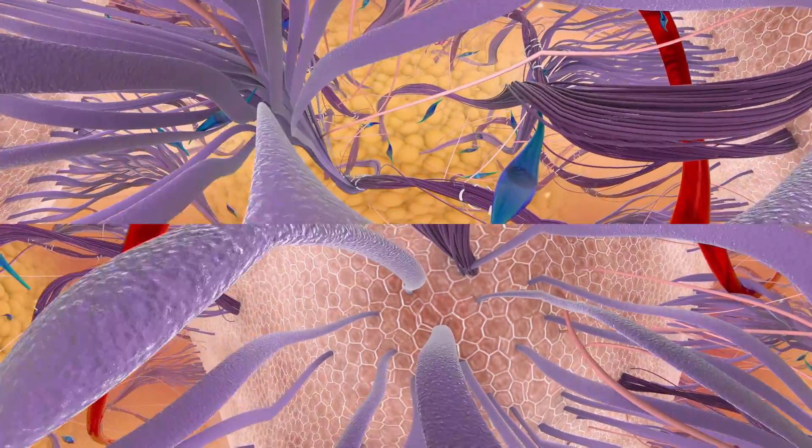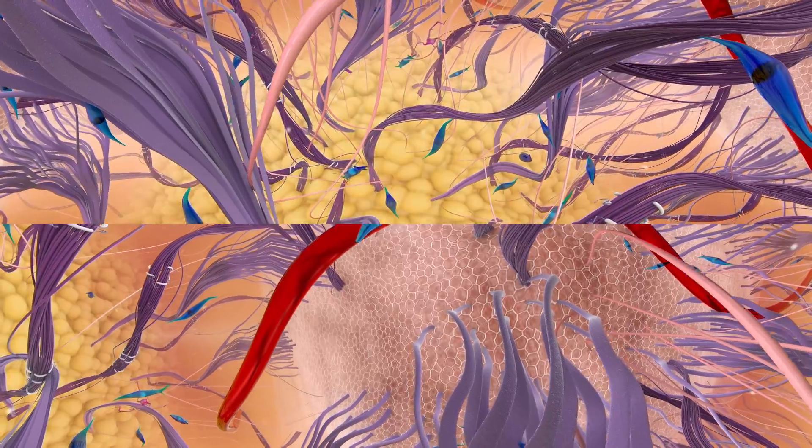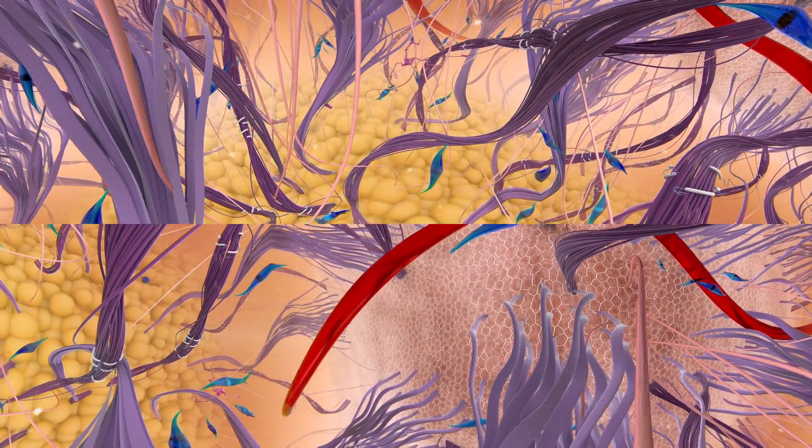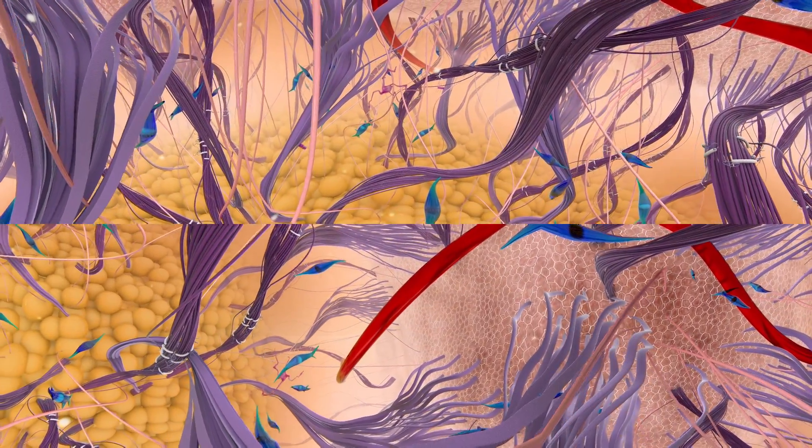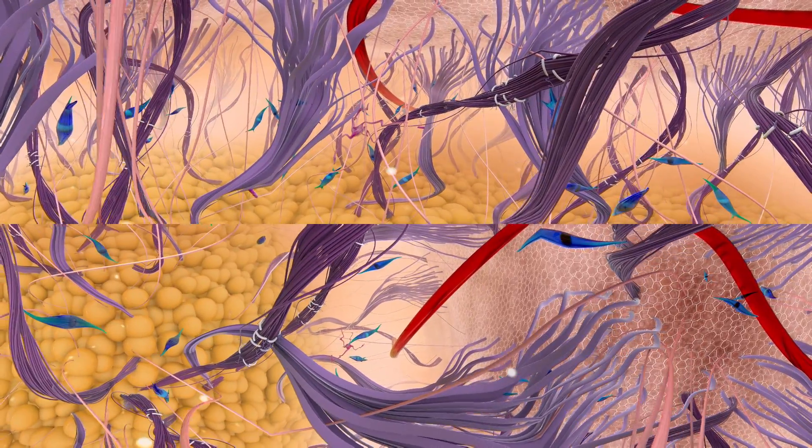You are now entering into the matrix of the dermis. If you look down, you will see round yellow fatty cells called adipocytes creating the hypodermis. These cells are an energy reservoir for the skin.